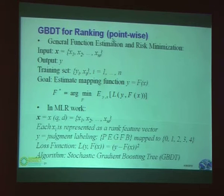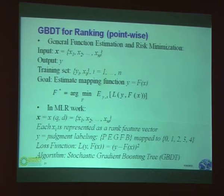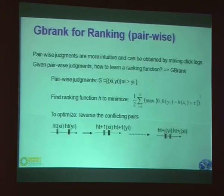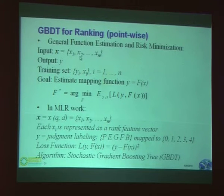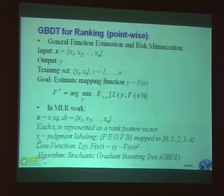It is called a point-wise algorithm, meaning for different training data we consider each data point — each query and URL pair — as one learning point, and consider each query-URL pair independently. Later, there are other algorithms called pairwise and listwise. It is a general function estimation and risk minimization problem. The input is a big matrix x, where each x_i is a vector representing a query-URL pair, and the output y is the learning target — a five-grade label.